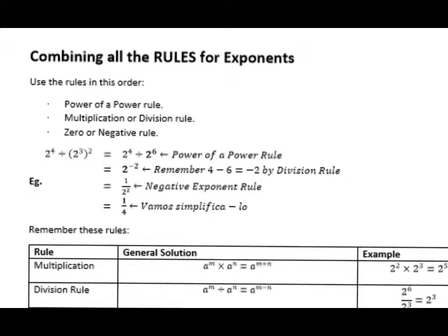Now that we've got that, the next rule we look for — there's no more power of a power in here. So now we have to use either the multiplication or division rule. In this case, we're going to use the division rule, which gives us an exponent of negative 2 on our base of 2. Remember, 4 minus 6 is negative 2, just by the division rule.